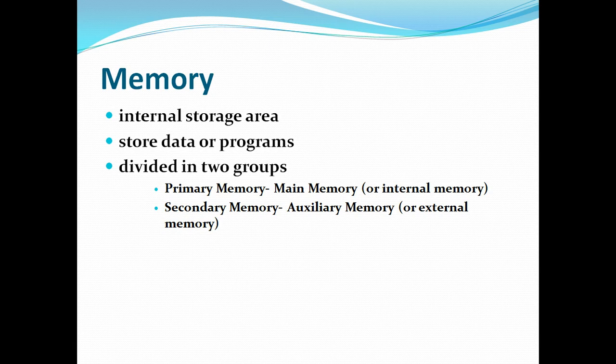All the instructions or data that has to be used by the CPU — the central processing unit — has to be loaded into memory. So computer memory is divided into two parts: primary memory and secondary memory.